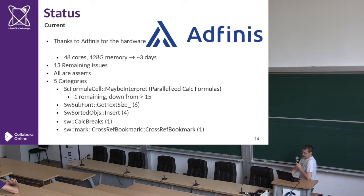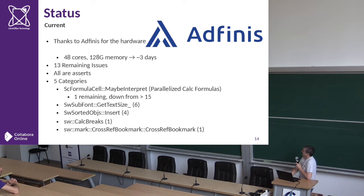The most recent numbers show 13 remaining issues. There are some assert issues in parallel calculations in Calc spreadsheets, and the rest are asserts in Writer itself. None of them are obvious crashes - they're all asserts. The Calc ones are probably indicative of a potential crash or incorrect results, and the rest are probably more semantic. Mike may have fixed some of these asserts recently, and there's an additional issue with Armin's item sets to be sorted out soon.